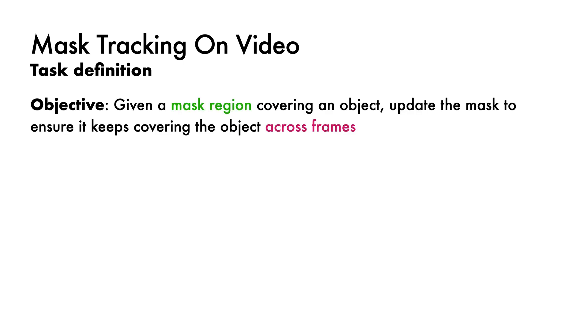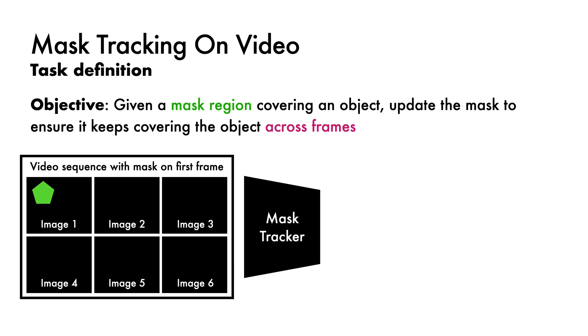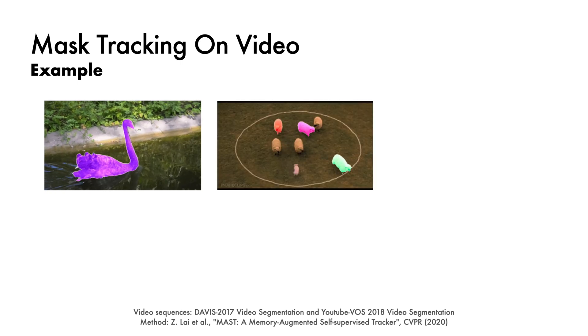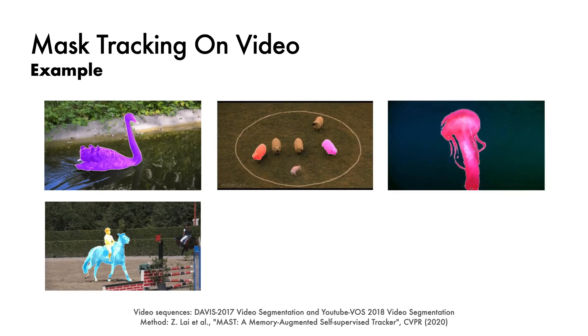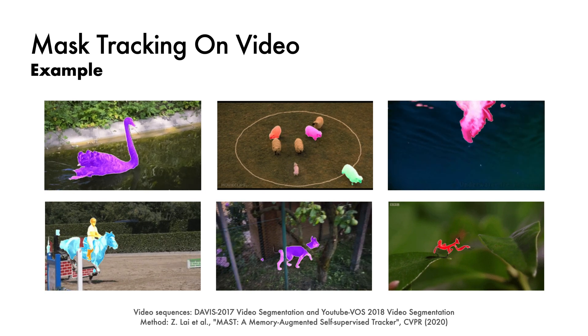Next we have mask tracking on video. The objective is: given a mask covering an object, update the mask to ensure it keeps covering the object across frames. So given a sequence with the first frame labelled, the job of the mask tracker is to update the other frames with the mask by following the object. Given only labels from the first frame, we can track a swan, some sheep, a jellyfish, a horse and rider, and a dog.